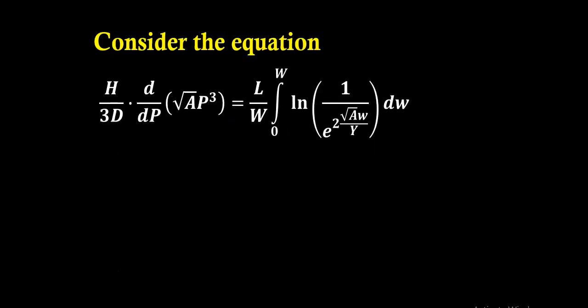H by 3D into d/dP of root A into P cube equal to L by W, integral from 0 to W of ln of 1 divided by e to the power of 2 root A W by Y, dW. Now so many letters are present here. Among them, how many of them are constant and who all are variable? We should know it.